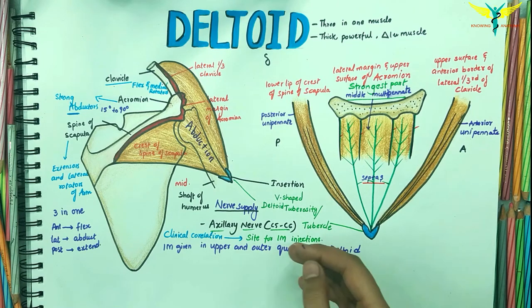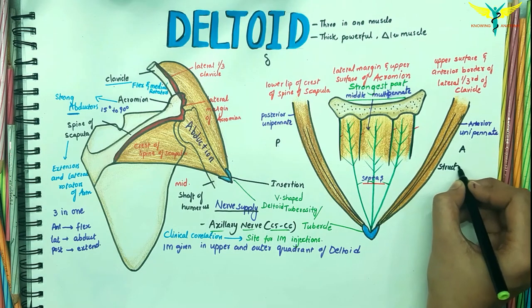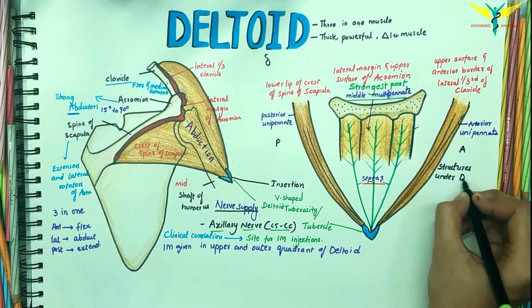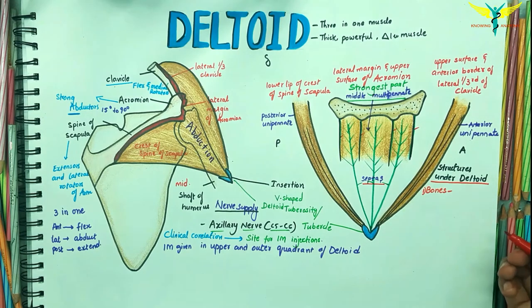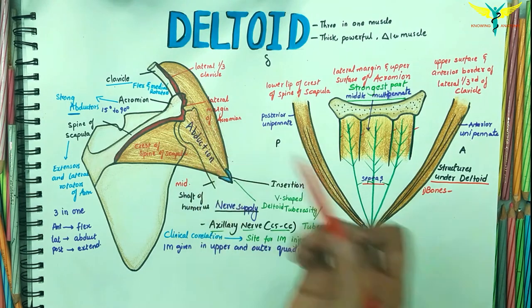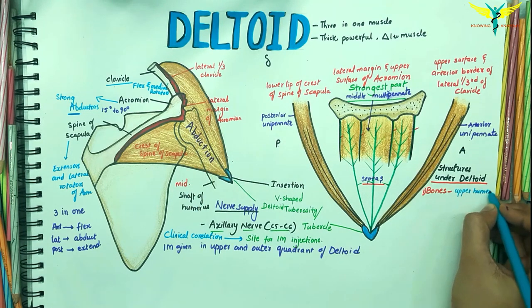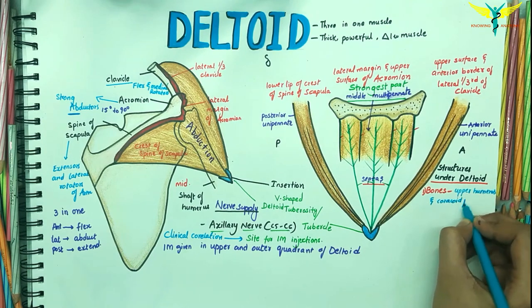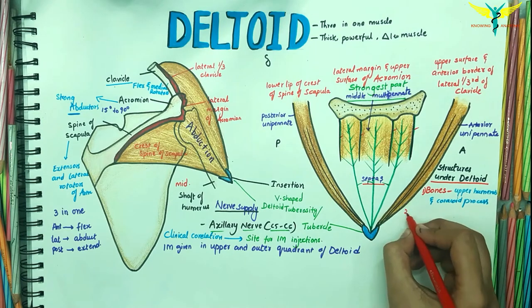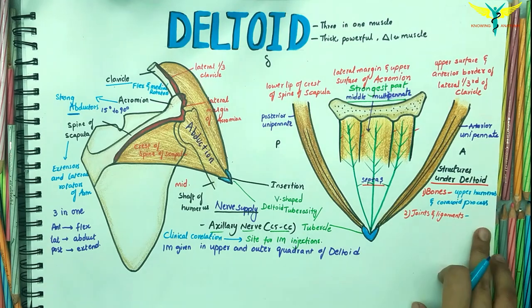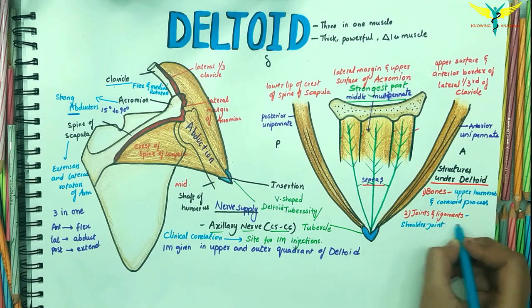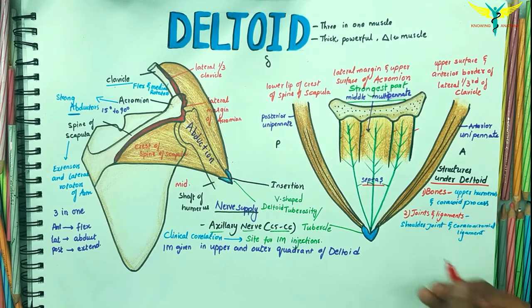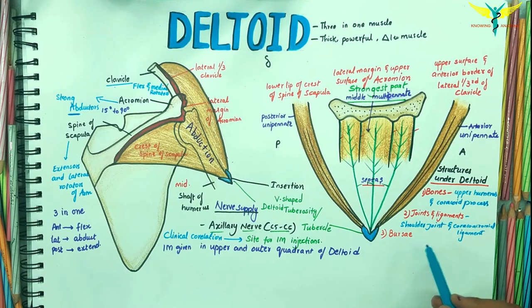Now let's talk about the structures that are under cover of the deltoid. The bones under the cover of the deltoid are the upper end of the humerus and the coracoid process. The joints and ligaments include the shoulder joint or glenohumeral joint and the coracoacromial ligament.